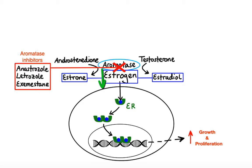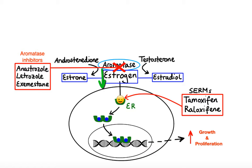The second method is to interfere with the binding of estrogen to the estrogen receptors. This can be accomplished with the use of Selective Estrogen Receptor Modulators (SERMs), such as tamoxifen and raloxifene. In hormone receptor positive cancer cells, these agents competitively bind to the estrogen receptor protein and adopt a different conformation from the one seen with estrogen bound. The complex then dimerizes and is transported into the nucleus, where it binds to DNA to form a new complex that is unable to function in the same way as the one formed with estrogen, resulting in inhibition of the growth-promoting effects of estrogen.